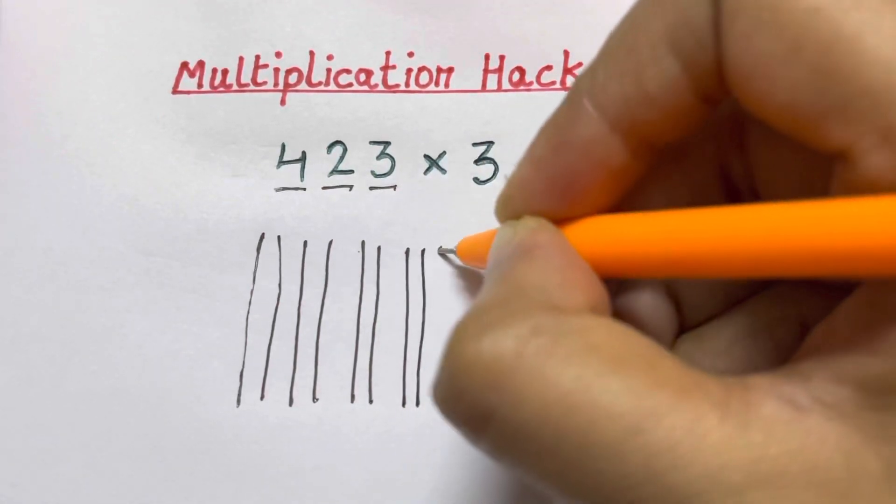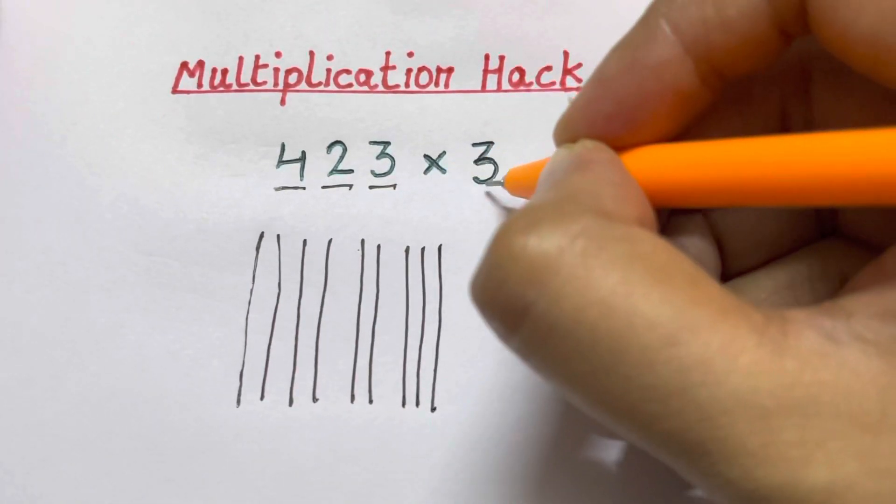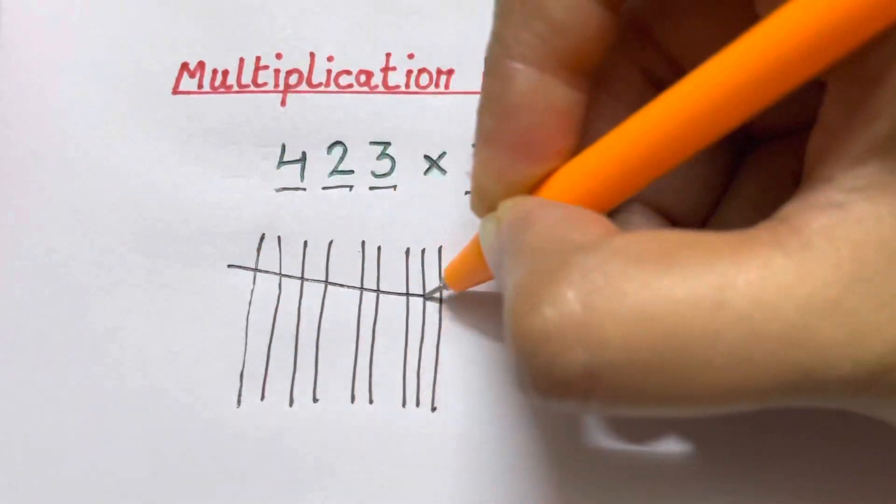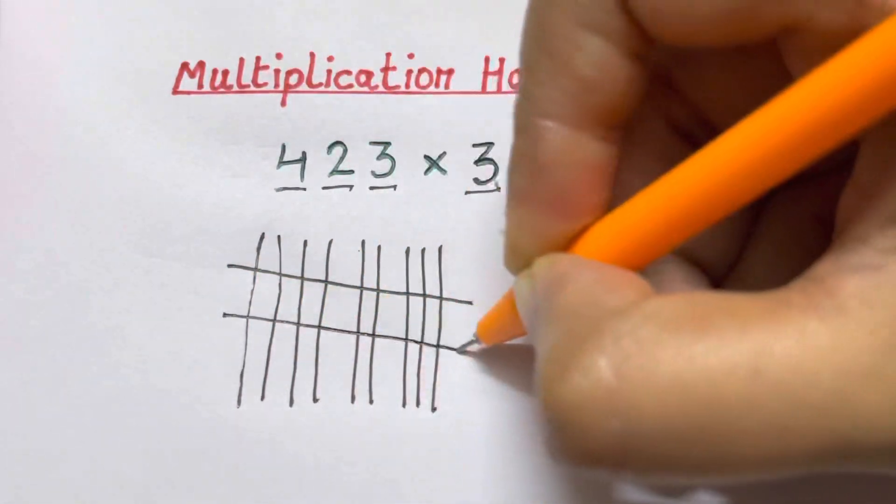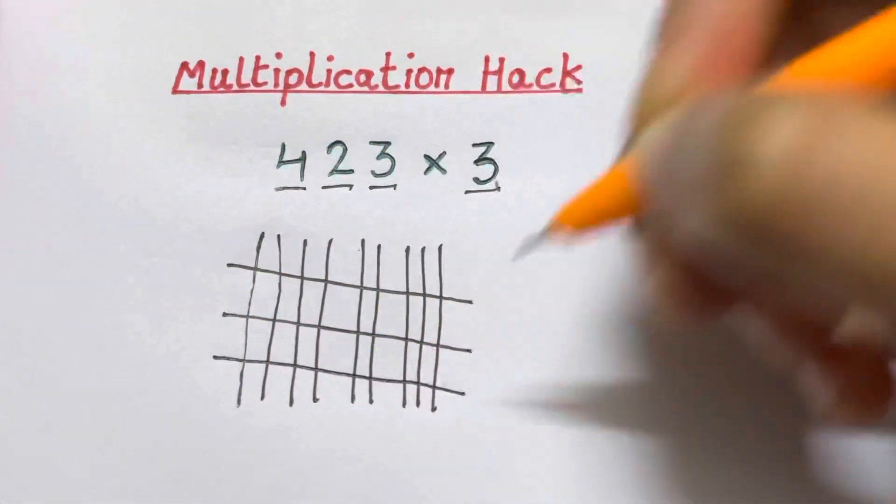So 1, 2 and 3. Now multiplied by 3 means you're going to divide it with horizontal lines. 1, 2 and 3.